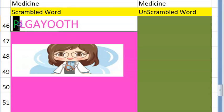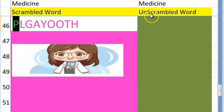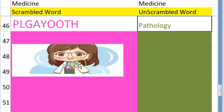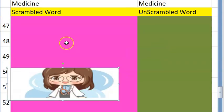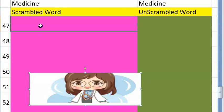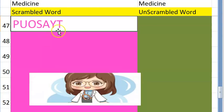The forty-sixth one is a '-logy' and starts with P — it's all about gross and microscopy — pathology. Very good!